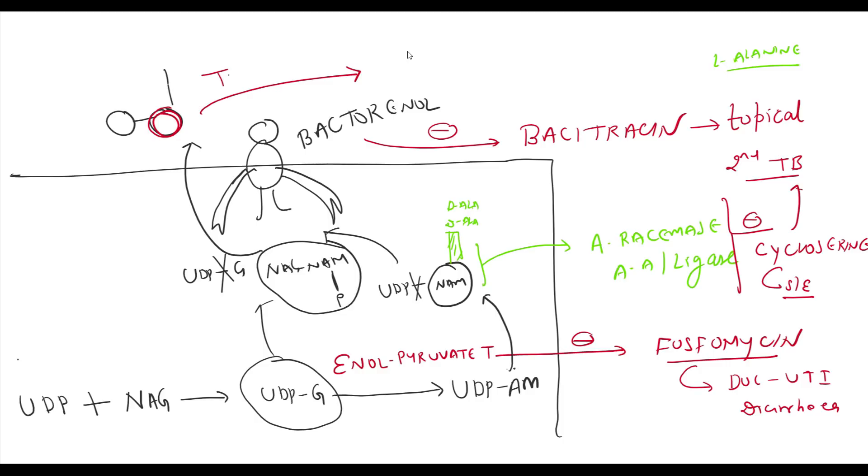The elongation of this unit occurs with help of enzyme transglycosylase. And this transglycosylase enzyme is inhibited by antibiotic vancomycin. Vancomycin is used for MRSA infection.